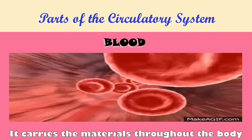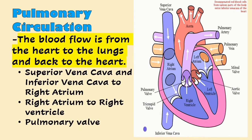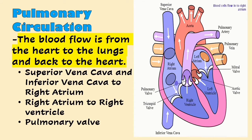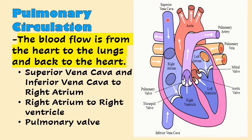Let us proceed to the two types of circulation. The first type is pulmonary circulation. It is the type of blood circulation wherein the blood flow is from the heart to the lungs and back again to the heart. Let us trace how blood circulates in pulmonary circulation. First, the deoxygenated blood collected from the rest of the body enters the heart through the superior and inferior vena cava.